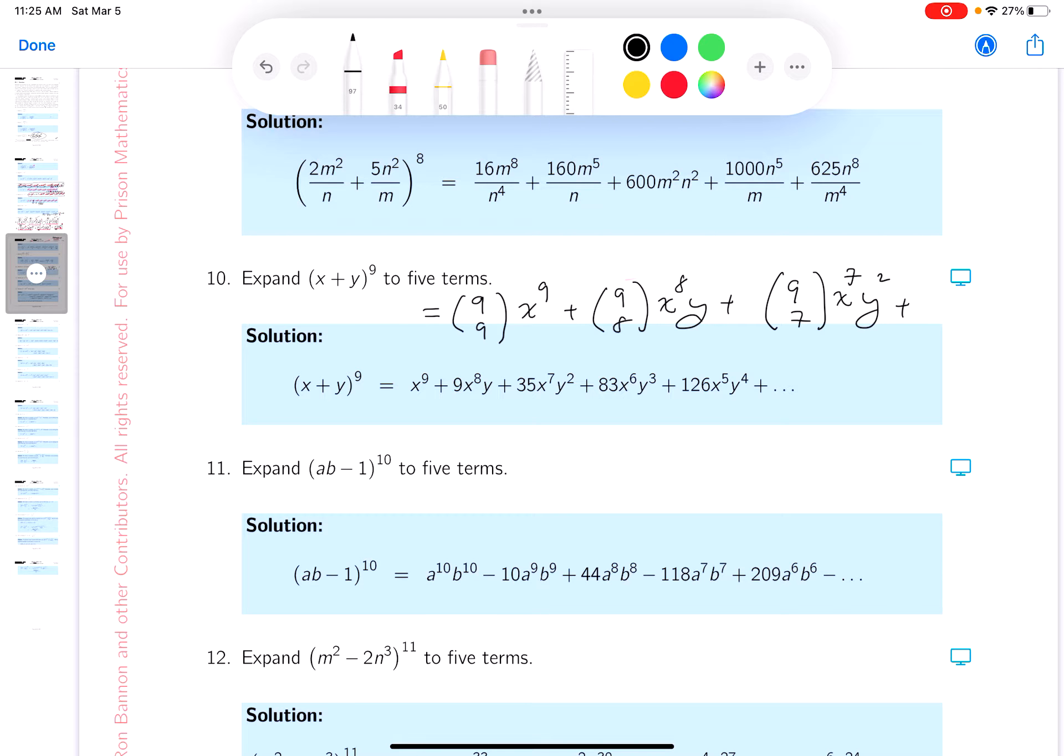It's still problematic. I still have to write the terms down. And I'm running out of room, so I'll put it over here. So 9 choose 6, x to the 6, y cubed. And then we get 9 choose 5, x to the 5, y to the 4.